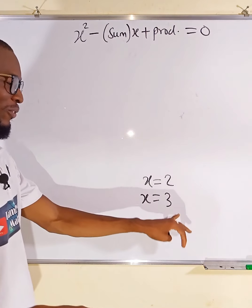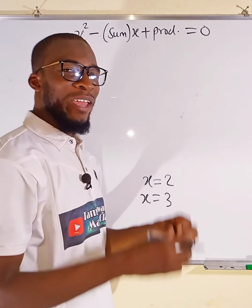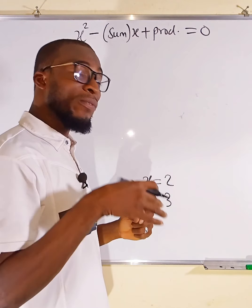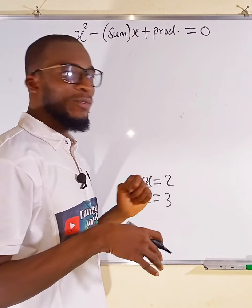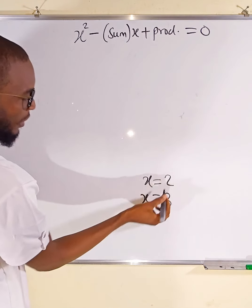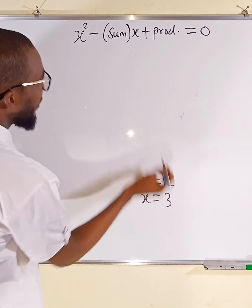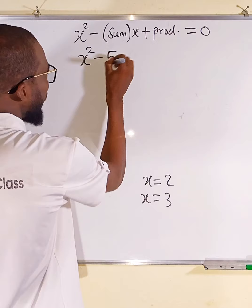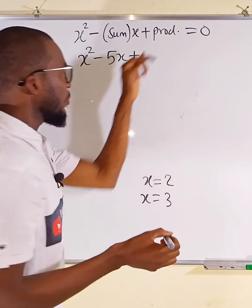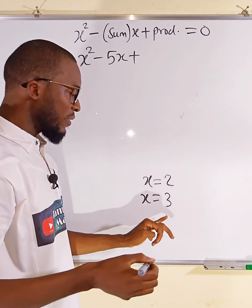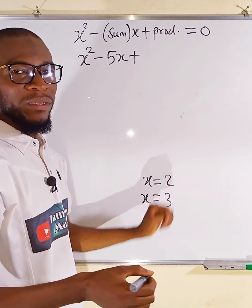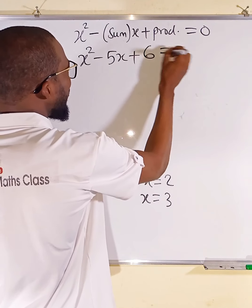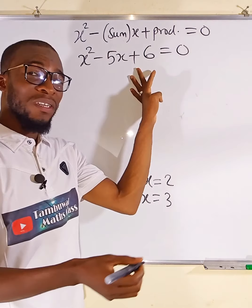Once you substitute these values, you end up getting a quadratic equation which, when you solve, you get these values. So the sum is 2 plus 3 equal to 5, so we have x squared minus 5x, plus their product — 2 multiplied by 3 is 6 — and this is equal to 0. This is the quadratic equation.